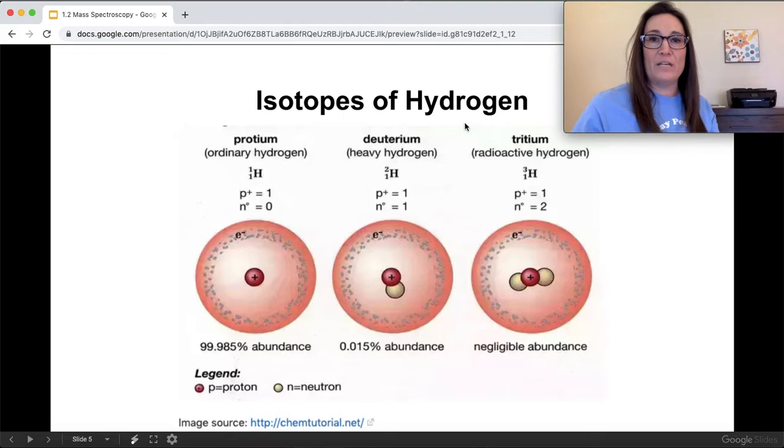Next, when you have an isotope, a lot of times they'll list it out. They'll show you the proton count, the neutron count. They'll show you that the proton stays the same, the neutron count goes up, which means your tritium is your heaviest isotope of hydrogen. It's also negligible in terms of abundance.